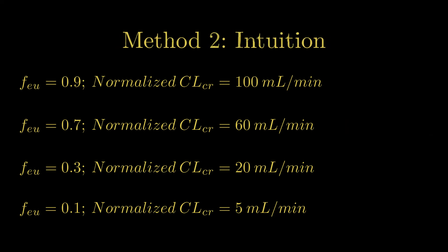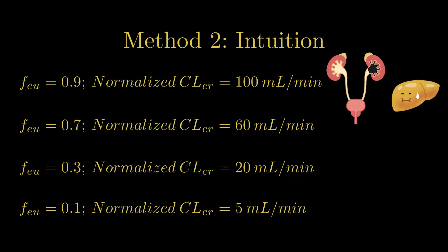Now, there's a second way that requires a bit more intuition and conceptual knowledge. We know that FEU means the fraction excreted unchanged through the kidneys, meaning it doesn't get metabolized through the liver.